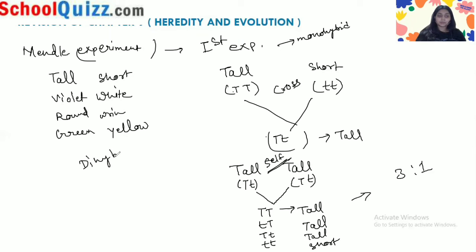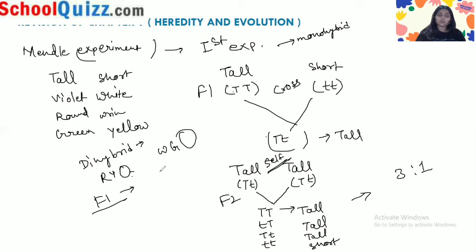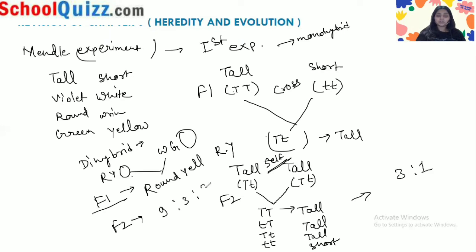Mendel also did a dihybrid experiment involving two traits. He crossed round yellow seeds with wrinkled green seeds. In F1 he got round yellow seeds. Then in F2, when he crossed two round yellow seeds, he found a ratio of 9 round yellow : 3 round green : 3 wrinkled yellow : 1 wrinkled green — the 9:3:3:1 ratio.